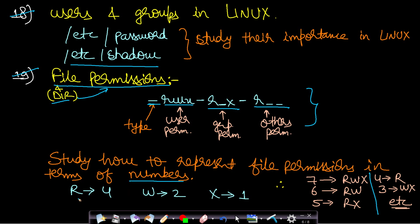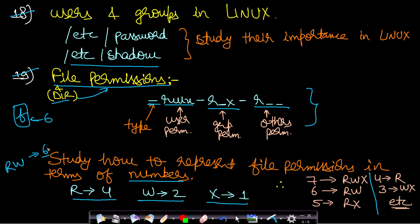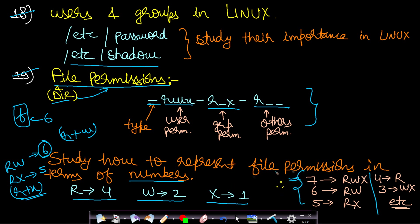You should understand file permissions in terms of numbers as well. For read the value is 4, for write the value is 2, and for execute the value is 1. So if you want to give read and write permission, you add 4 plus 2 to get a value of 6. These values are additive. For read and execute, the value is 4 plus 1 which is 5, or you can write it as r+x. These are examples easily available on the internet.